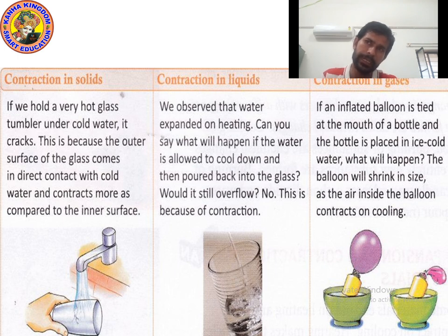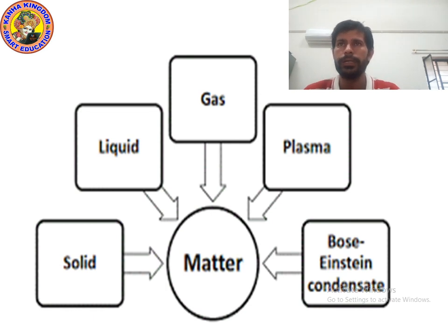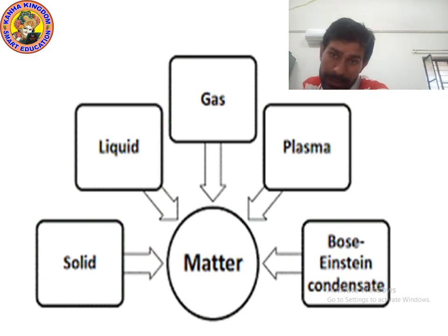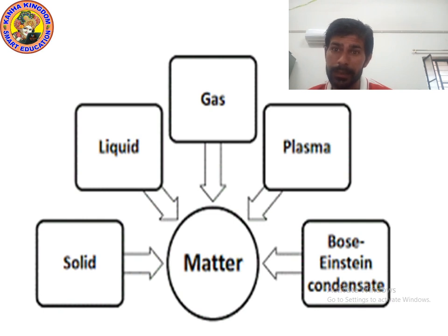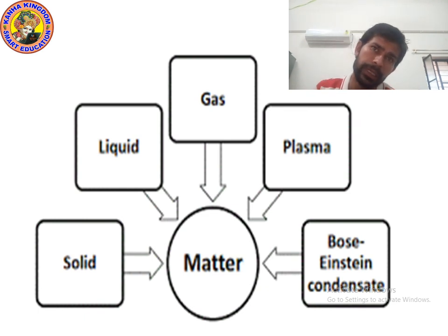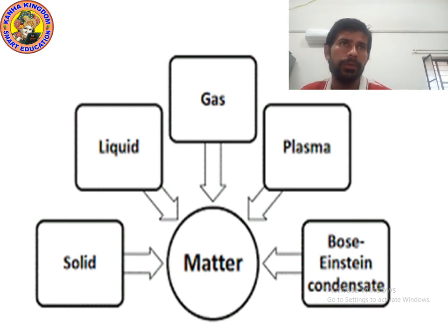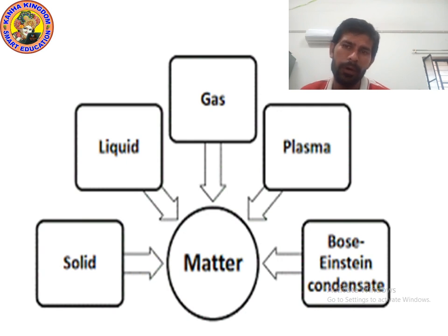Now I want to ask you — how many states of matter are there? Solid, liquid, gas — yes, but actually there are five states of matter: solid, liquid, gas, plasma, and Bose-Einstein condensate. But since you are in a lower class, we talk about only solid, liquid, and gas. Plasma is actually even found in the sun and stars. Please write this down.